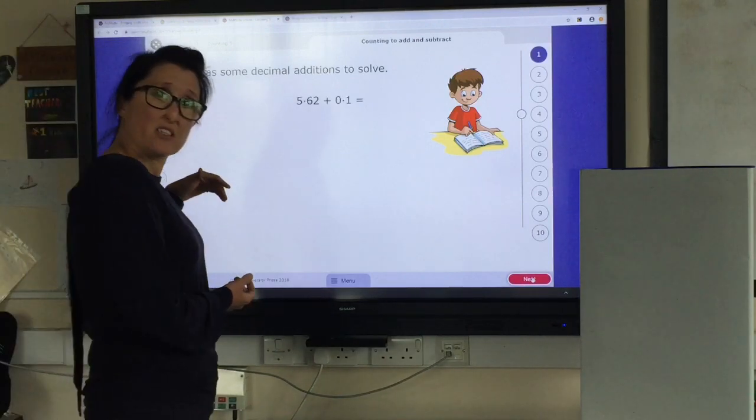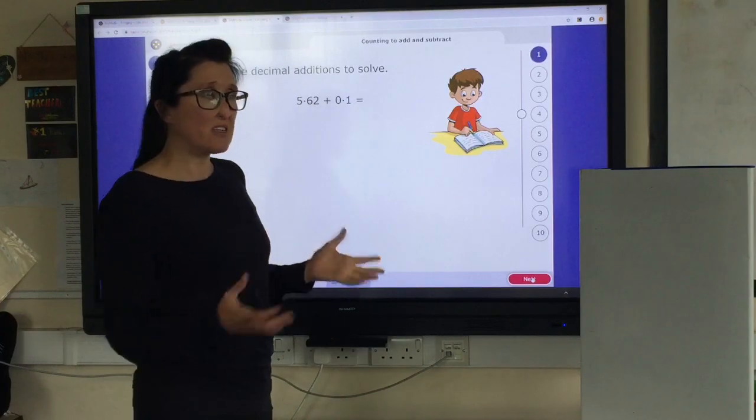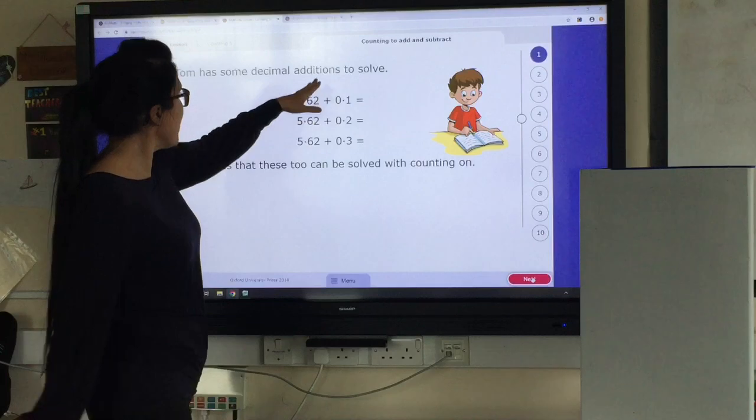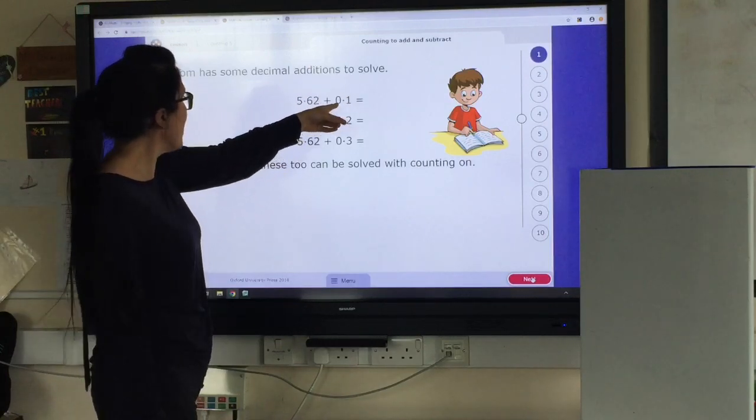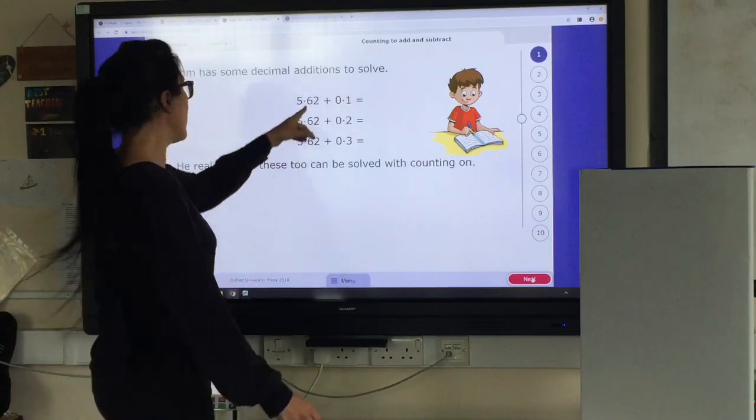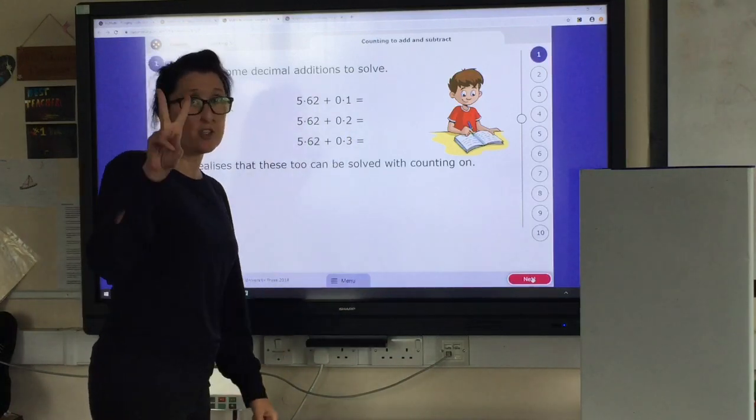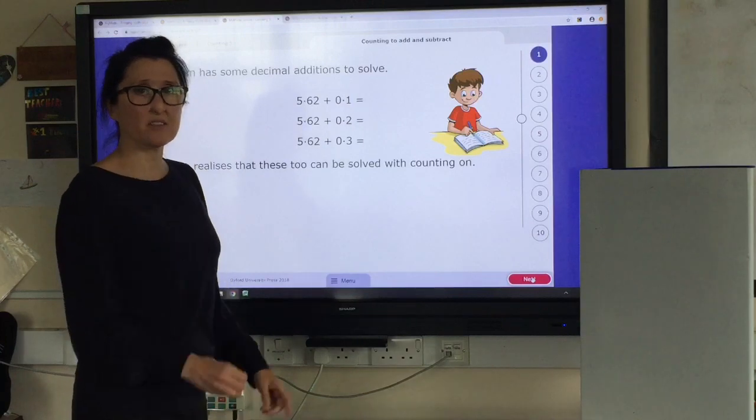We can use this strategy to work with decimals. Decimal numbers are no more difficult than whole numbers, so we don't need to be afraid of them. We can see here that we're adding on in tenths. Now, 0.1 is 1 tenth. 0.2 is 2 tenths. 0.3 is 3 tenths.